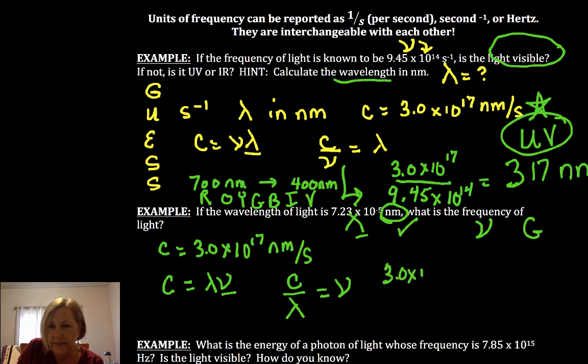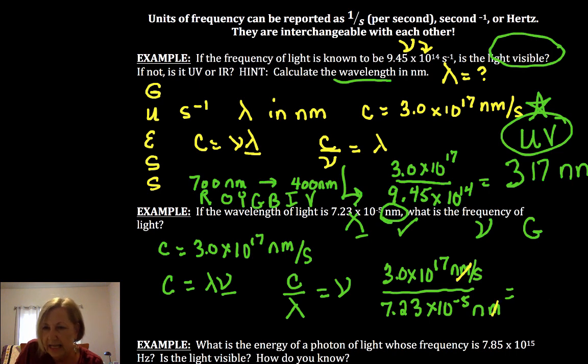So 3.0 times 10 to the 17th nanometers per second, we've checked our units, but it never hurts to include them. 7.23 times 10 to the minus fifth nanometers. Nanometers cancel and I'm left with seconds to the minus one. When I plugged that into my calculator, I got 4.15 times 10 to the 21st seconds to the minus one for my frequency of light.